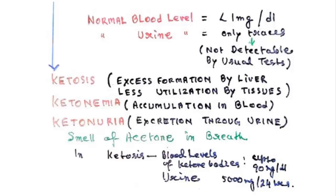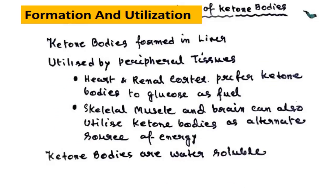The smell of acetone in the breath of a ketosis patient is because acetone is expelled through the lungs. Regarding formation and utilization: ketone bodies are formed in the liver — the only organ which produces them — and utilized by all peripheral tissues. Heart and renal cortex prefer ketone bodies rather than glucose, and skeletal muscle and brain can also utilize ketone bodies as an alternate source of energy. Because ketone bodies are water-soluble, the liver can readily liberate them into the blood for transport to peripheral tissues.